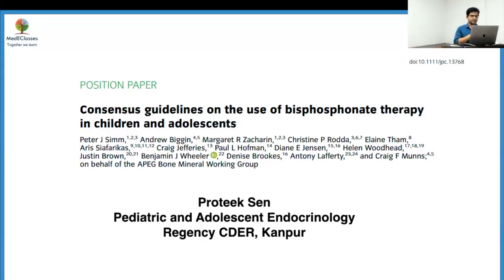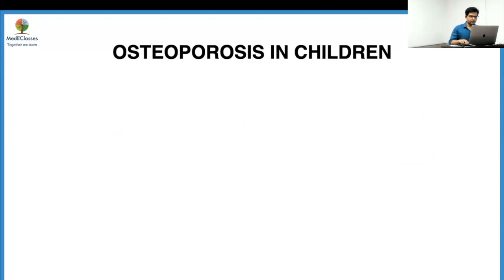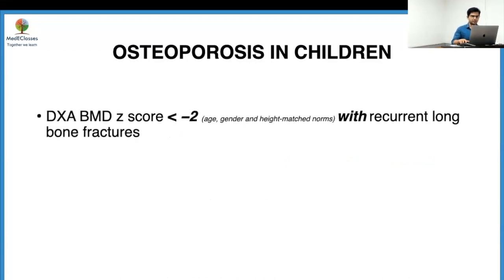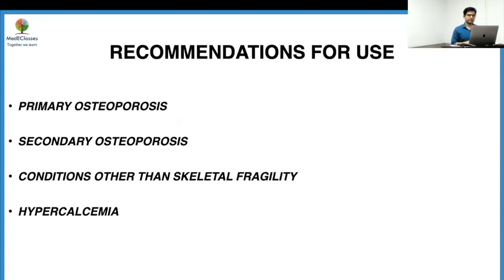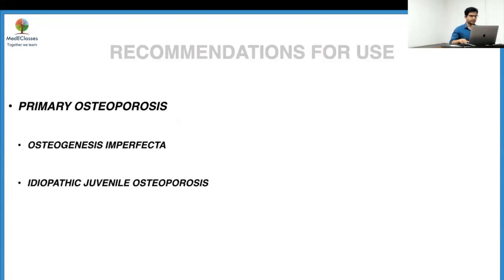These are the consensus guidelines on the use of bisphosphonate therapy in children and adolescents. The guidelines begin with the definition of osteoporosis in children: a DEXA BMD Z-score less than -2 (age, gender, and height-matched norms) with recurrent long bone fractures — meaning two or more — or a vertebral compression fracture irrespective of BMD Z-score. They recommend bisphosphonates in primary osteoporosis, secondary osteoporosis, conditions other than skeletal fragility, and hypercalcemia.